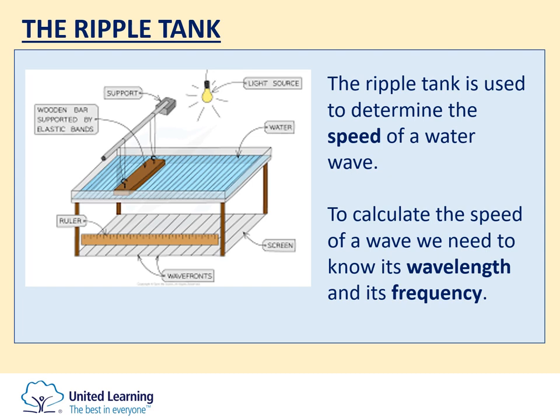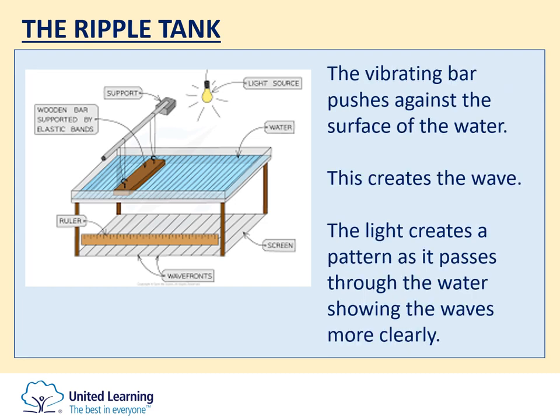In order to calculate the speed of a wave you need to know its wavelength and its frequency, and we can get both of those pieces of information using the apparatus. The vibrating bar is attached to an electric power supply with a little motor that causes it to vibrate. It's very important that the bar is held just a millimetre or so above the surface of the water. That creates the wave which travels across the tank, and as you can see from the diagram, you can see the shadow of the wavefronts moving across the screen.